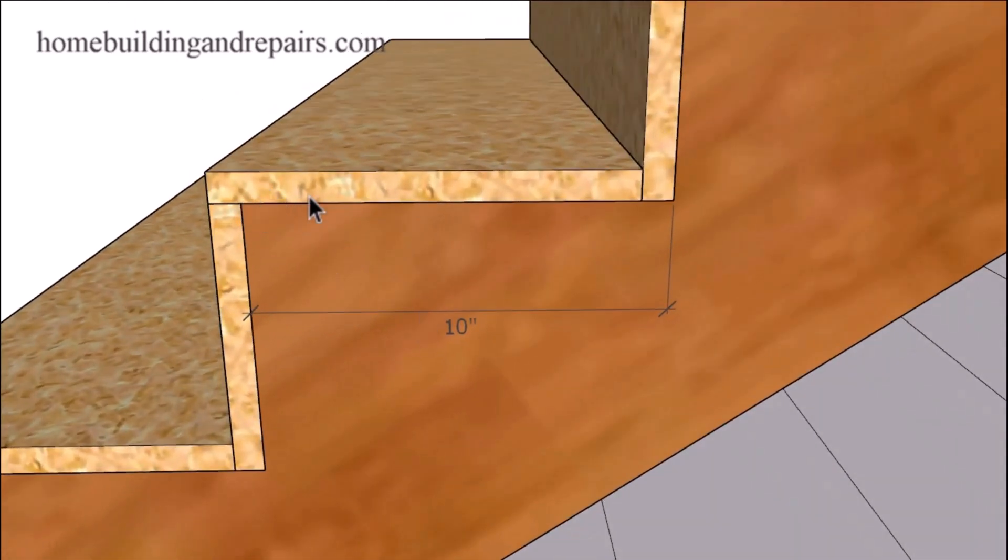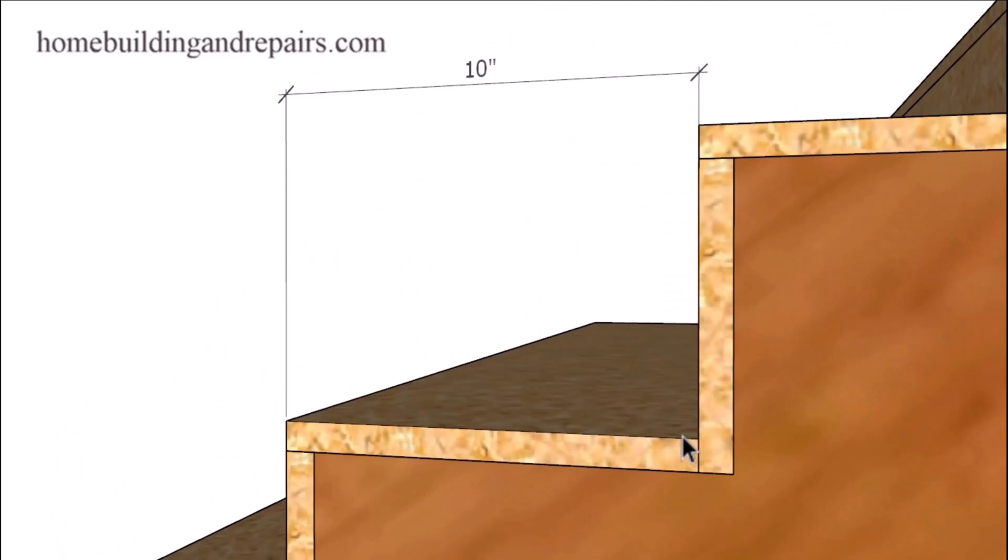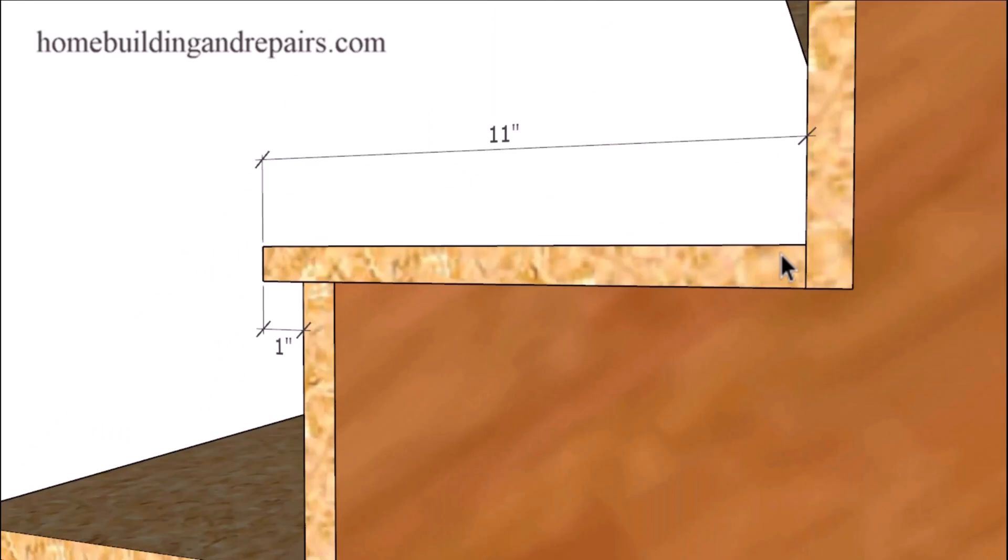So again, we're going to have a 10-inch measurement here on the stair stringer and we're going to have a 10-inch measurement for the finished step without a nosing. And if I want to add a one-inch nosing and create an 11-inch long stair tread, a stair tread with an 11-inch depth and a one-inch overhang, I'm just simply going to make the tread one inch wider.